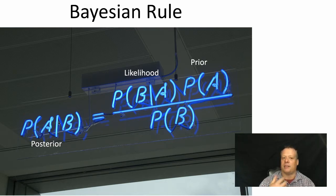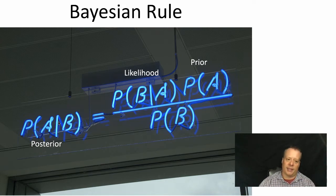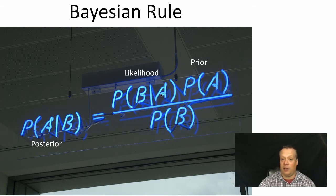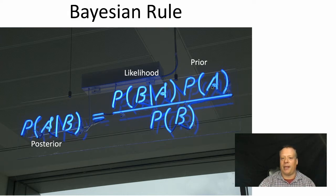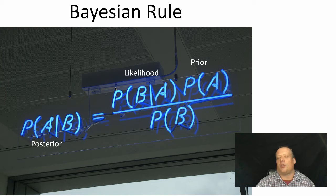This part — the probability of A given B — is called the posterior, because that's your probability after you calculate all these odds out. The probability of B given A is the likelihood of seeing B given A, and the probability of A is just the prior probability of A.